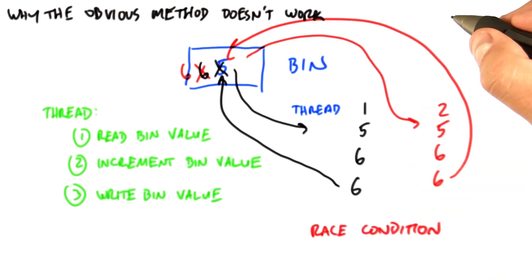The fundamental issue here is called a race condition. The problem is that incrementing the value in global memory takes multiple steps. And it's possible, as we've seen here, for two processors running simultaneously to interleave these steps.